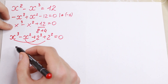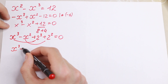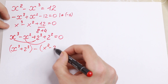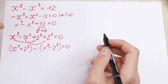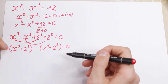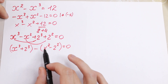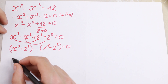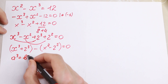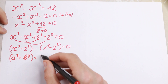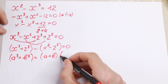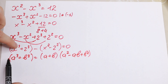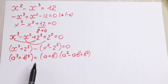This gives us a really interesting case: we have (x³ + 2³) minus (x² + 2²) equal to zero. As you can see, we have the sum of cubes and the difference of squares. The sum of cubes formula is: a³ + b³ = (a + b)(a² − ab + b²).